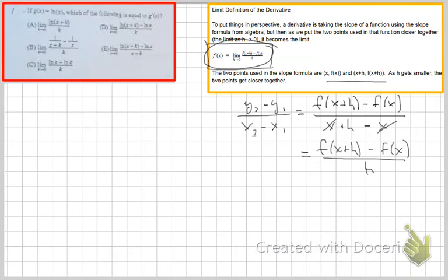And that's what this question is asking. They want to know that if our function is ln of x, and we want to use k here, then g of x plus k, we would be replacing the x with x plus k. So we get ln of x plus k.